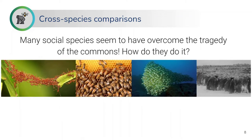Another area we can explore to help us understand cooperation — where it comes from and what is the role of cooperation principles in sustainability — is to look beyond humans to other species in the biological world. Many social species seem to have overcome the tragedy of the commons. They can cooperate, and they have been doing so for millions of years, so we can call this a pretty sustainable form of cooperation, and we can ask how they actually do it.